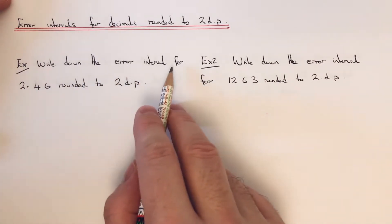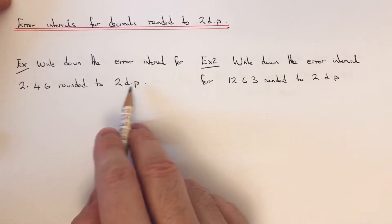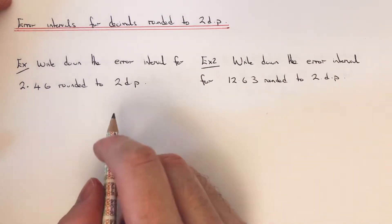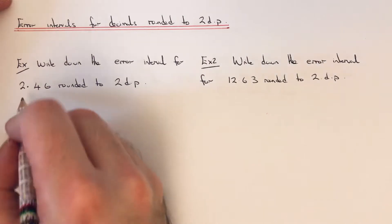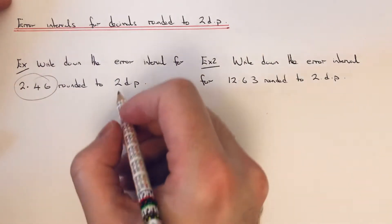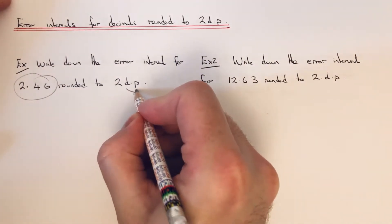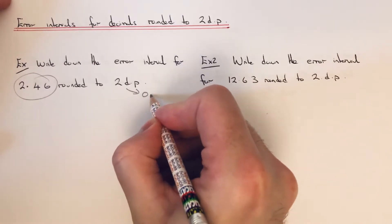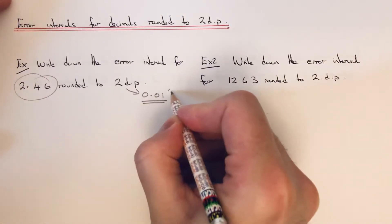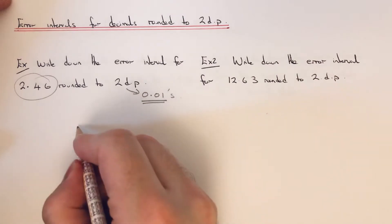Write down the error interval for 2.46 rounded to two decimal places. Since this decimal has been rounded off to two decimal places, this means our scale is going up in 0.01.